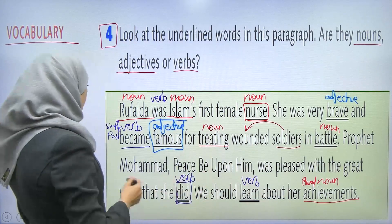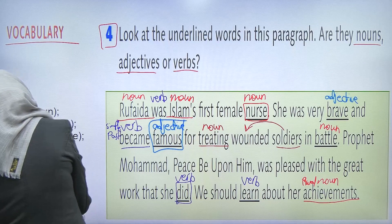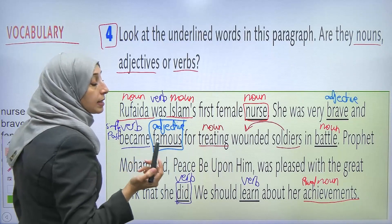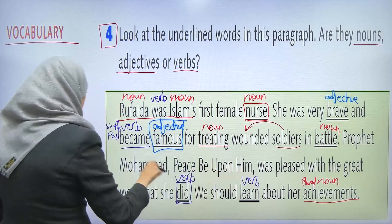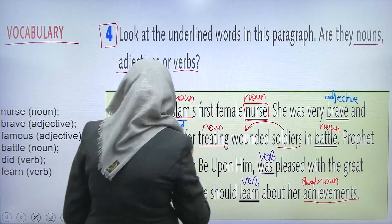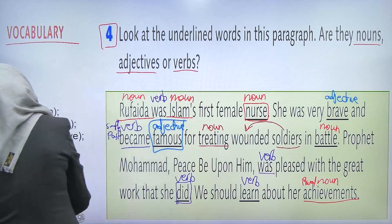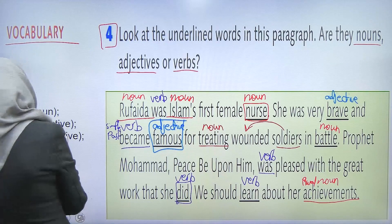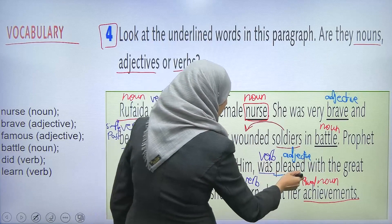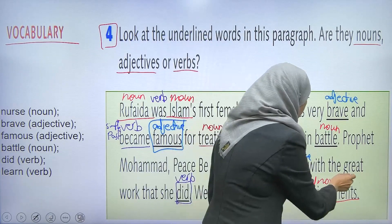في المعركة. Prophet Muhammad, peace be upon him, was pleased. كان مبسوط أو كان سعيد. كان، اللي هي 'was' — it's a verb. And 'pleased' — إيجت adjective. خلينا ناخد اللون تبع الـ adjective اللي هو الأزرق. Adjective. كان سعيداً. 'Great' is an adjective as well. Great work — وصفنا العمل.